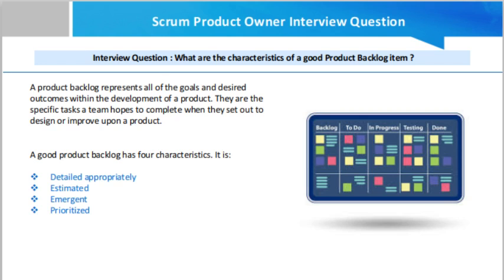Detailed Appropriately: Details matter, especially as a user story rises in priority. As a backlog item gets closer to being completed or moved into a sprint backlog, it requires more detail. Upcoming backlog items should be detailed appropriately so they can be better understood by the development team. The closer an item is to being completed, the more detailed it should be. Items lower on the priority list don't require nearly as much detail — it's poor use of time, since those items might be removed or revised later.